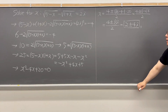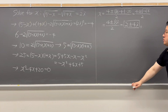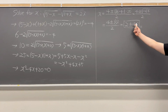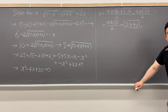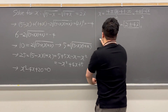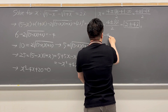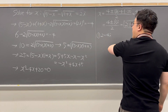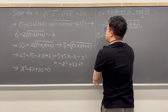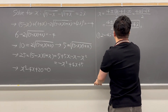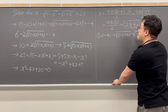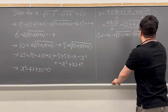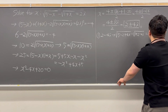Before we say this is the final answer, we need to check whether we have extraneous solutions. We need to check both 2 plus 4i and 2 minus 4i. Let's check 2 minus 4i first: plugging it into the original equation, we get the square root of (5 minus (2 minus 4i)), which is the square root of (3 plus 4i), minus the square root of (1 plus (2 minus 4i)), which is the square root of (3 minus 4i), and this should equal 2i.